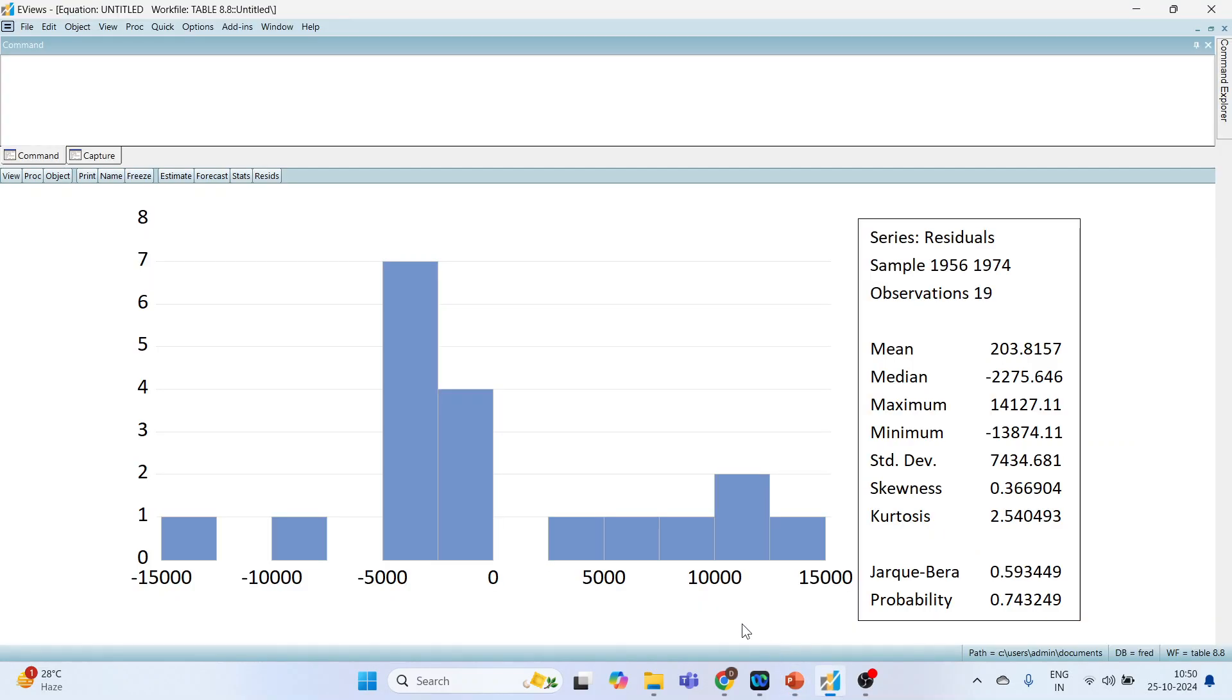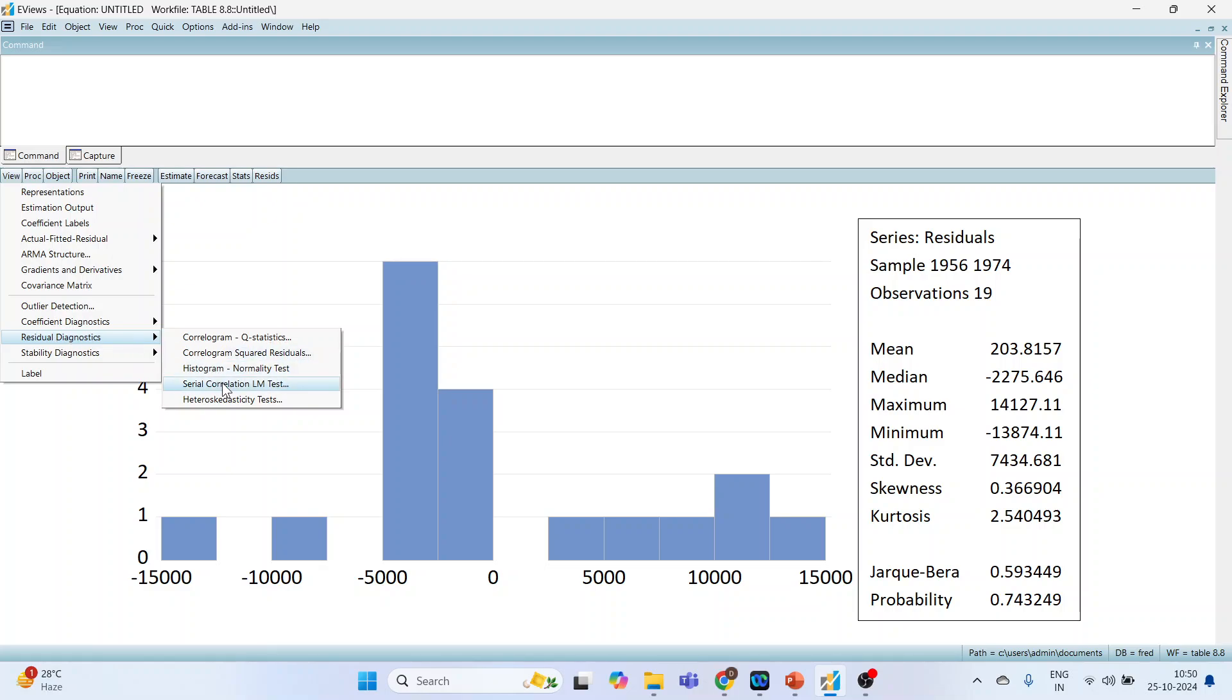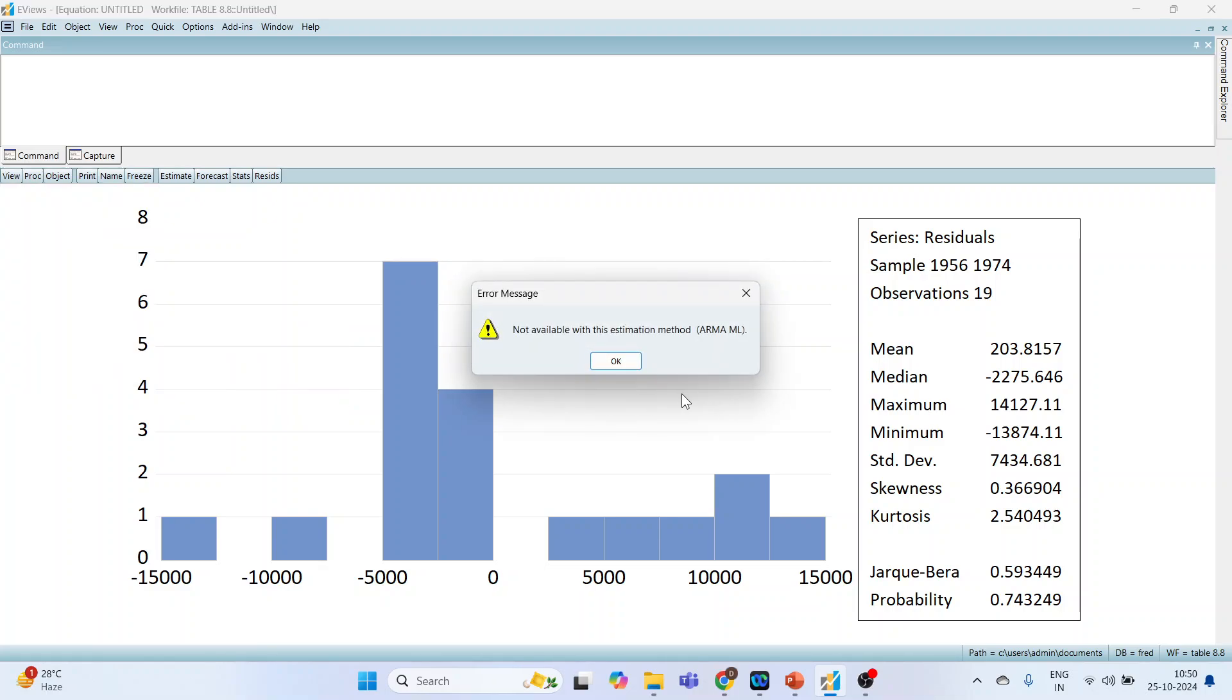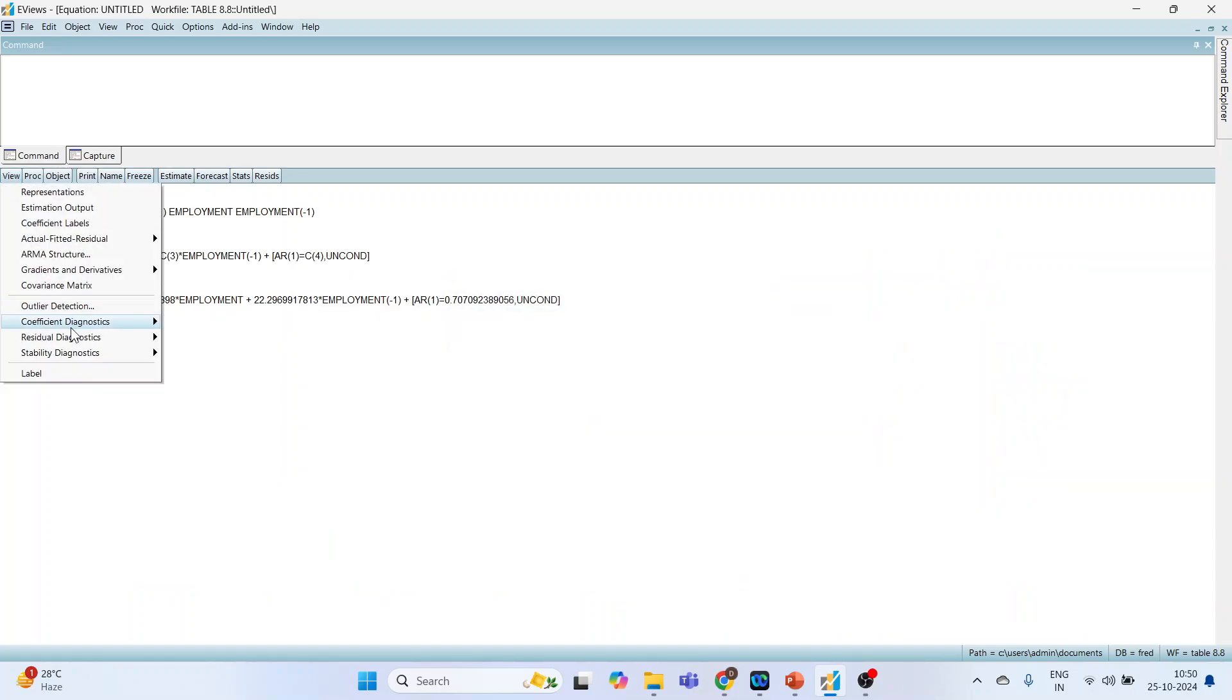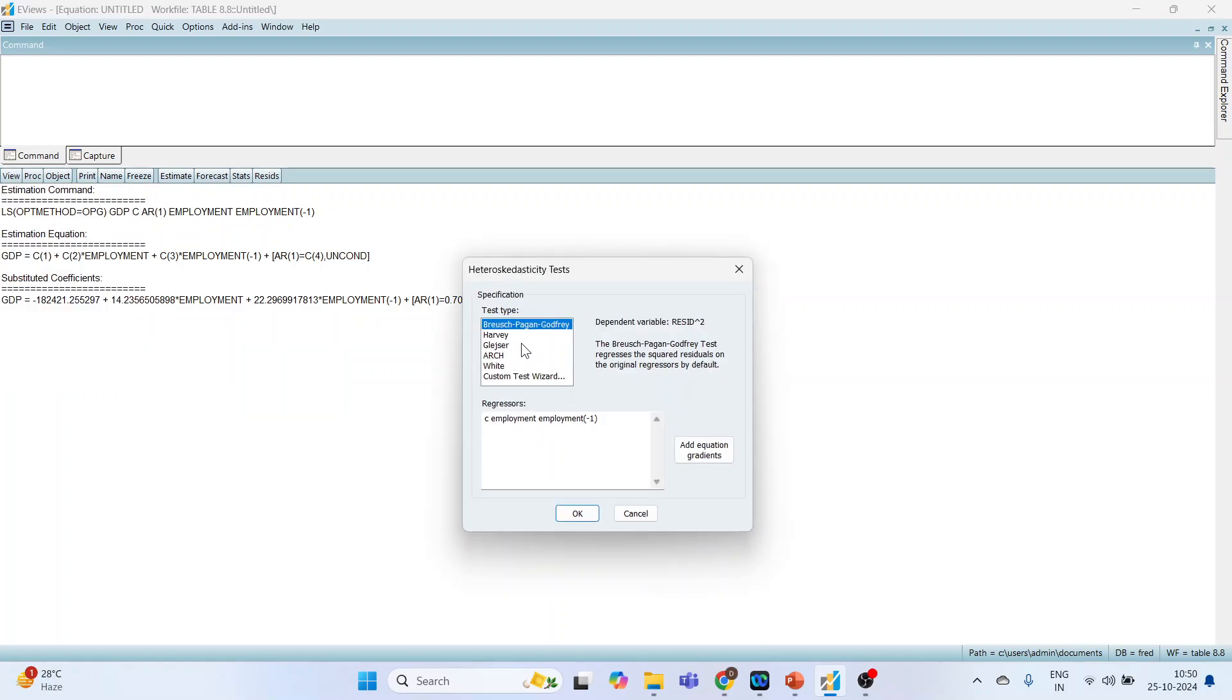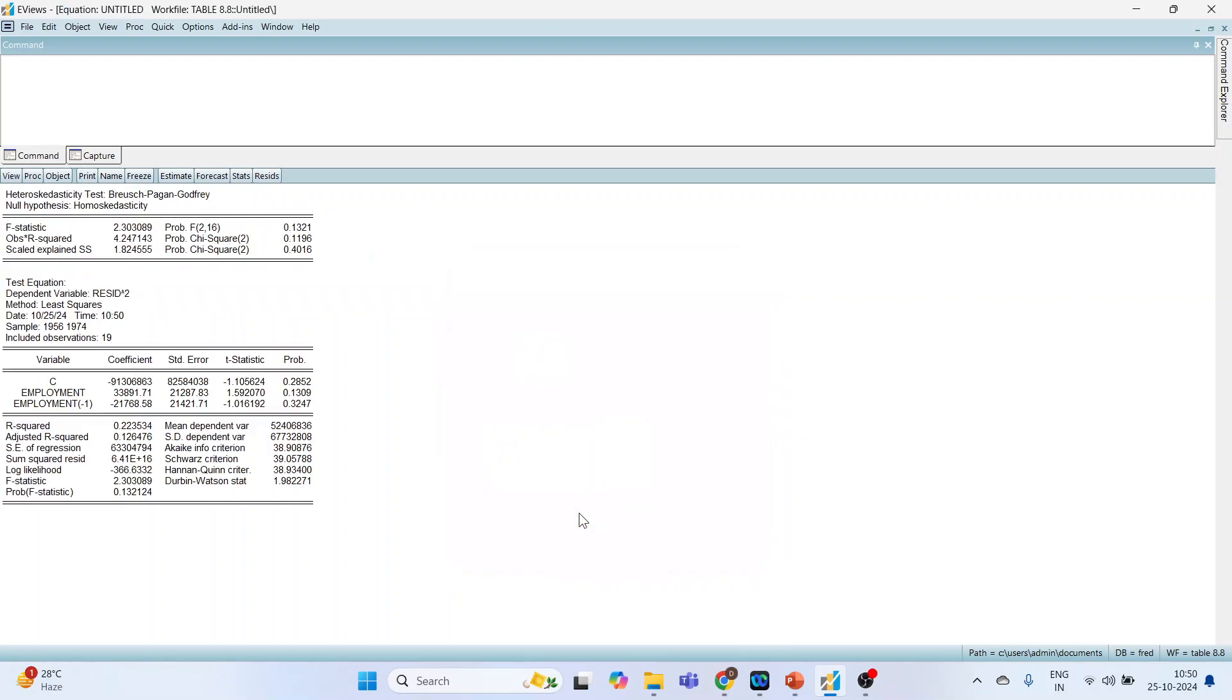Now let's check for other assumptions. Residual Diagnostics. Serial Correlation is not available here. No problem. We will go in View, Residual Diagnostics, and we will run heteroscedasticity test. Breusch-Pagan-Godfrey test. Click OK. And I will copy the results on the slide.